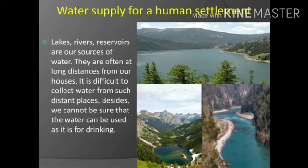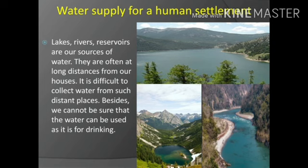Water supply for a human settlement. Lakes, rivers, and reservoirs are our sources of water. They are often at long distances from our houses. It is difficult to collect water from such distant places. Besides, we cannot be sure that the water can be used as it is for drinking.